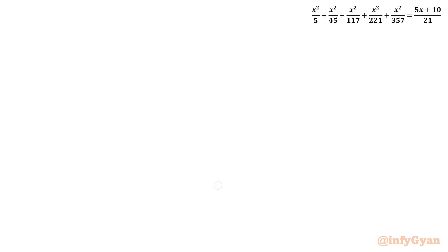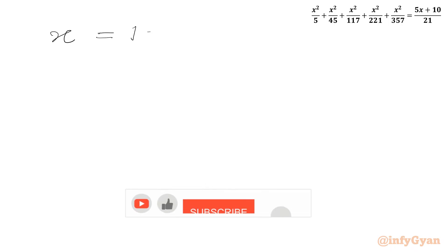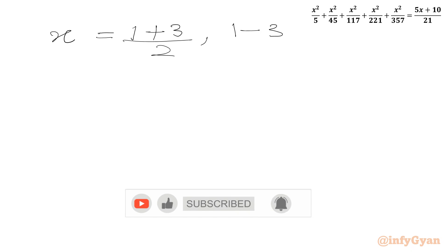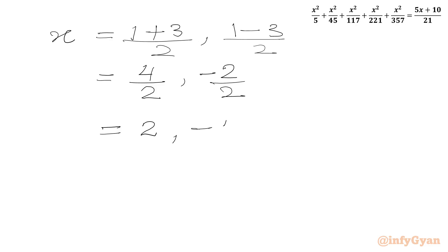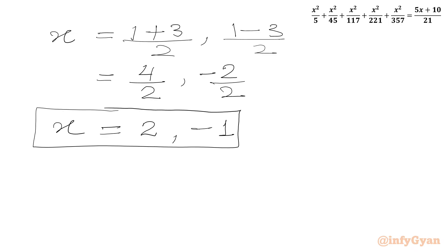We get two values of x: 1 plus 3 over 2 equals 4 over 2 equals 2, and 1 minus 3 over 2 equals minus 2 over 2 equals minus 1. So we have two real solutions: x₁, x₂ equals 2 and minus 1, which satisfy our equation.